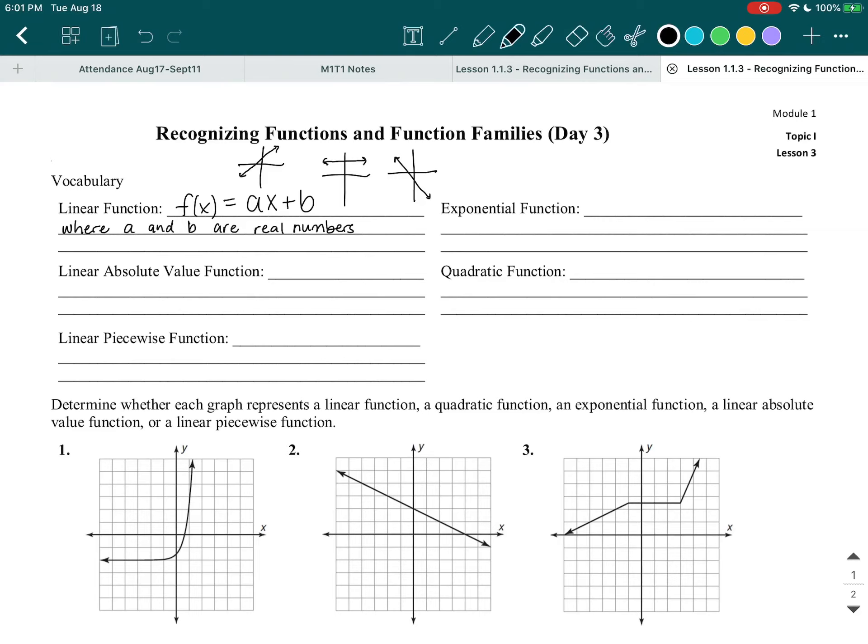Alright, let's write exponential functions. I'm just going to switch colors so that when I draw the graphs for the exponential functions, you'll know that these are exponential function graphs. So these functions have the form f of x is equal to a multiplied by b to the power of x. So the x is in the top right corner.